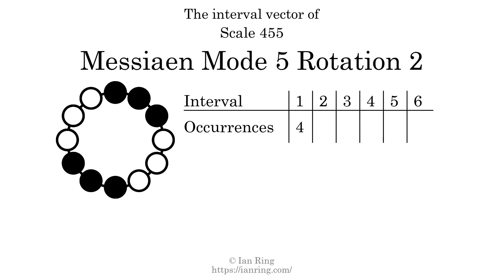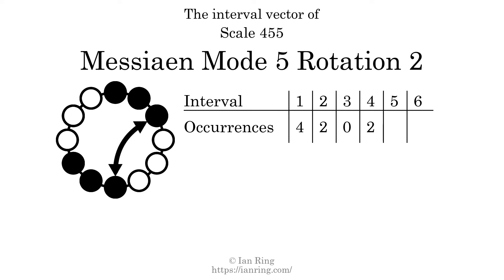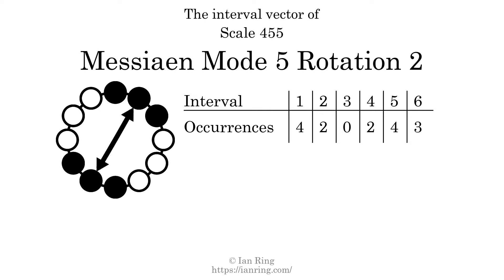The interval vector of a scale is a description of what intervals exist between its tones. There are 4 intervals with the size of 1 semitone. There are 2 intervals with the size of 2 semitones. There are no intervals with the size of 3 semitones. There are 2 intervals with the size of 4 semitones. There are 4 intervals with the size of 5 semitones. There are 3 intervals with the size of 6 semitones. Each interval does not appear in this scale a unique number of times, so this is not a deep scale.